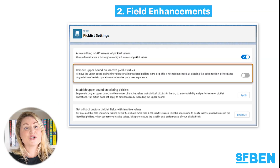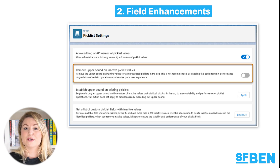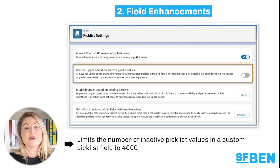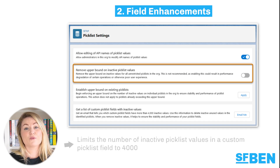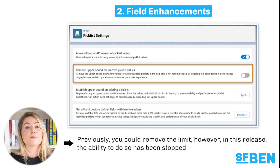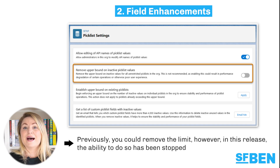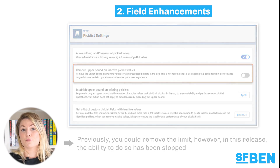This change was announced in Spring 23 but is enforced in Summer 23. The update limits the number of inactive picklist values in a custom picklist field to 4,000. Previously you could remove the limit; however, in this release, the ability to remove it has been stopped.